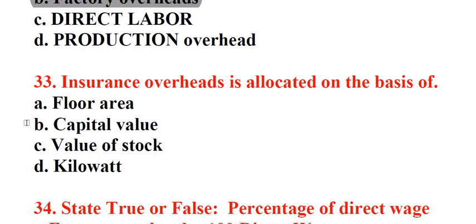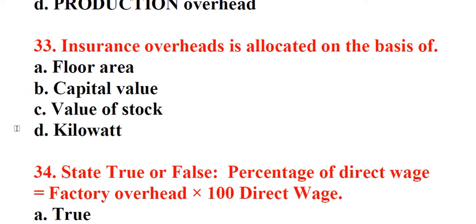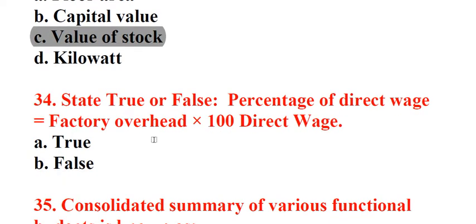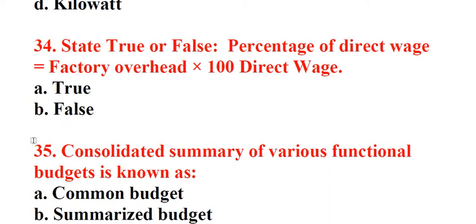Question 33: Insurance overheads is allocated on the basis of. A. Floor area, B. Capital value, C. Value of stock, D. Kilowatt. Answer: C. Value of stock. Question 34: State true or false. Percentage of direct wage equals factory overhead times 100 divided by direct wage. A. True, B. False. Answer: A. True.